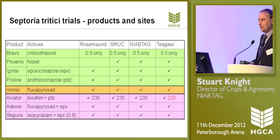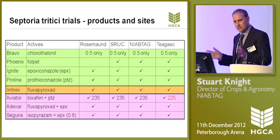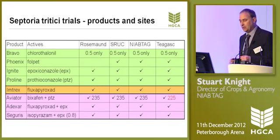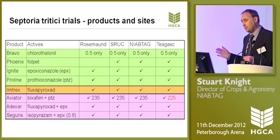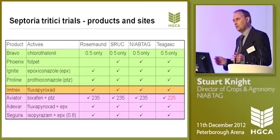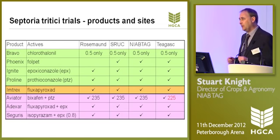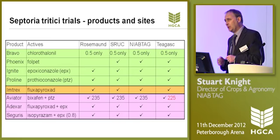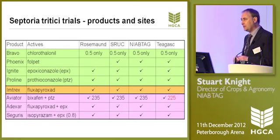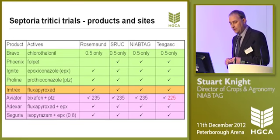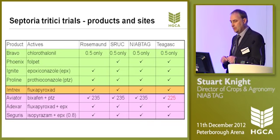Our final single active is Intrex fluxapyroxad, a straight SDHI fungicide. It's very important to say — and I'll try to remember to repeat this — that this is not because we see SDHIs being used as straights. We see them being used in partnership with other products, but we test them to understand as much as we can about the active ingredient. As well as those five straights, we have three mixture products — the three SDHI-azole products dominant in new chemistry: Aviator, a mixture of bixafen and prothioconazole; Adexar, fluxapyroxad plus epoxiconazole; and Seguris, isopyrazam and epoxiconazole.